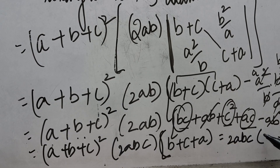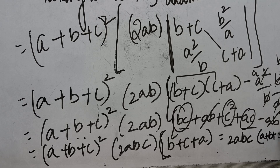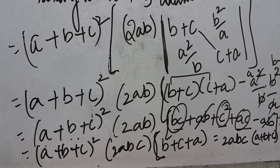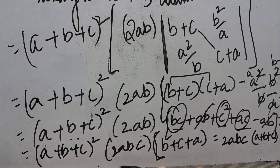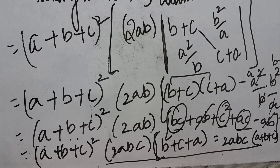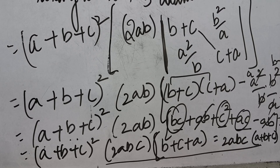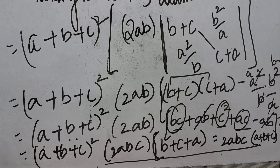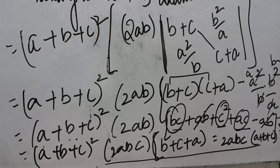So 2abc(a+b+c)³ is exactly what was asked. We have proven the left hand side equal to the right hand side. Using elementary operations on rows and columns, we have reached the required conclusion. Thank you.